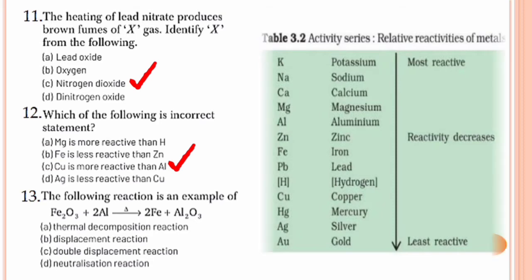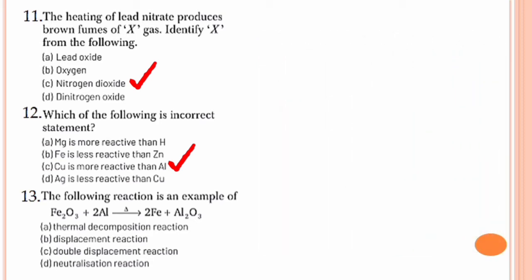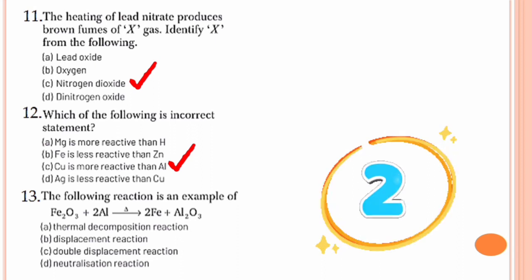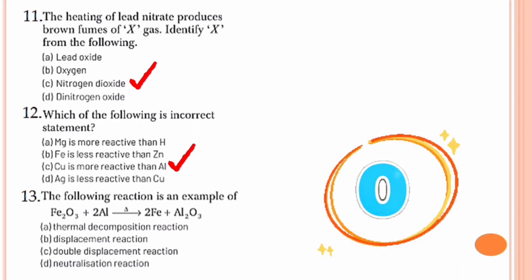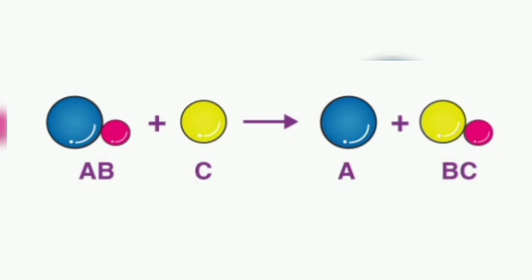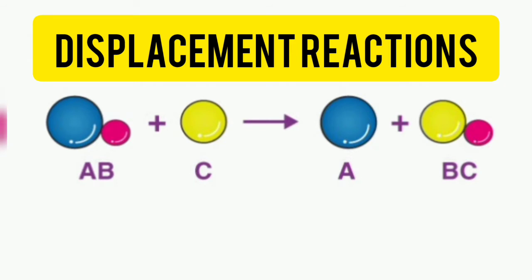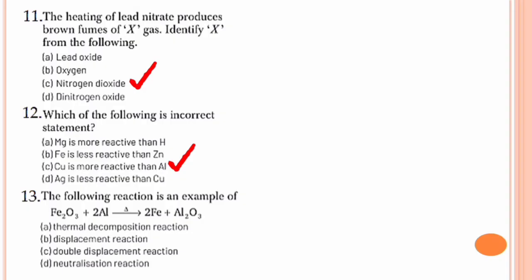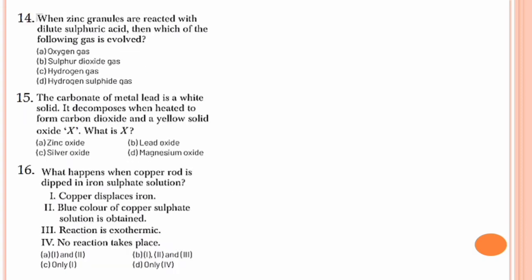Question number 13. The following reaction — Fe2O3 + 2Al gives 2Fe + Al2O3 — is an example of what? The chemical reaction resembles the general equation AB + C gives A + BC, which is an example of a displacement reaction. Here, aluminium being highly reactive displaces iron from ferric oxide. So the option is option B, displacement reaction.